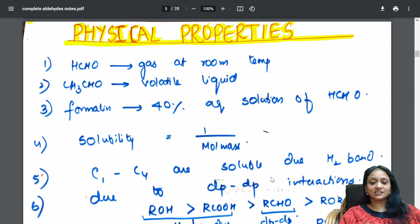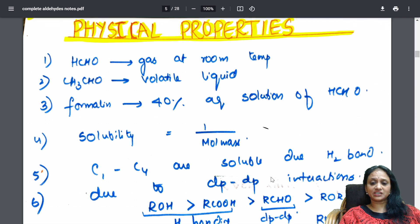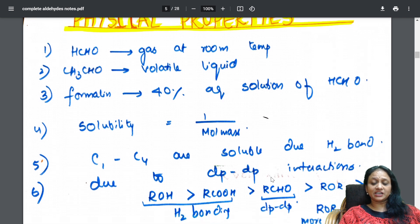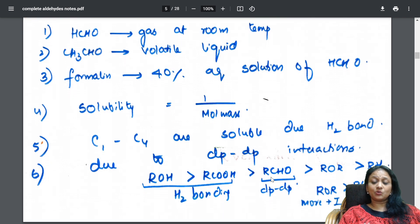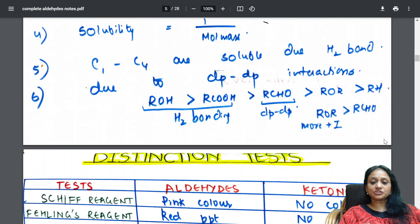See here. Physical properties completely. What is a liquid? What is a gas at room temperature? Which is a liquid? And what does solubility depend upon? And what are the order for solubility in hydrogen bonding? Everything I have mentioned, starting from alcohols till hydrocarbons.